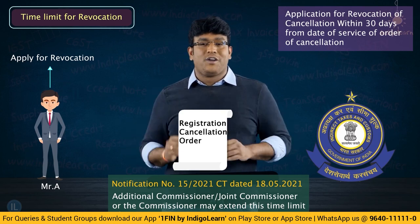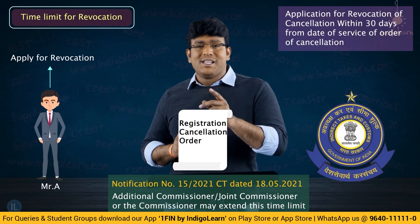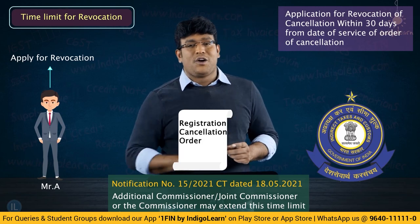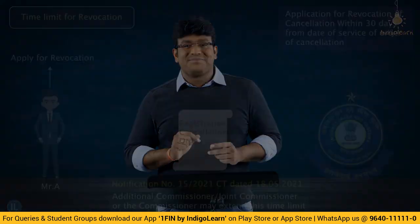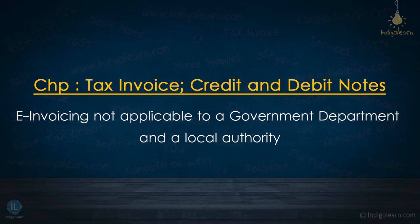The next amendment is from Chapter 11 — tax invoice, credit note, debit note. The concept of e-invoicing is applicable to those category of persons whose aggregate turnover exceeds 50 crores. Once upon a time it was 500 crores, then they changed it to 100 crores, and recently they changed it to 50 crores.